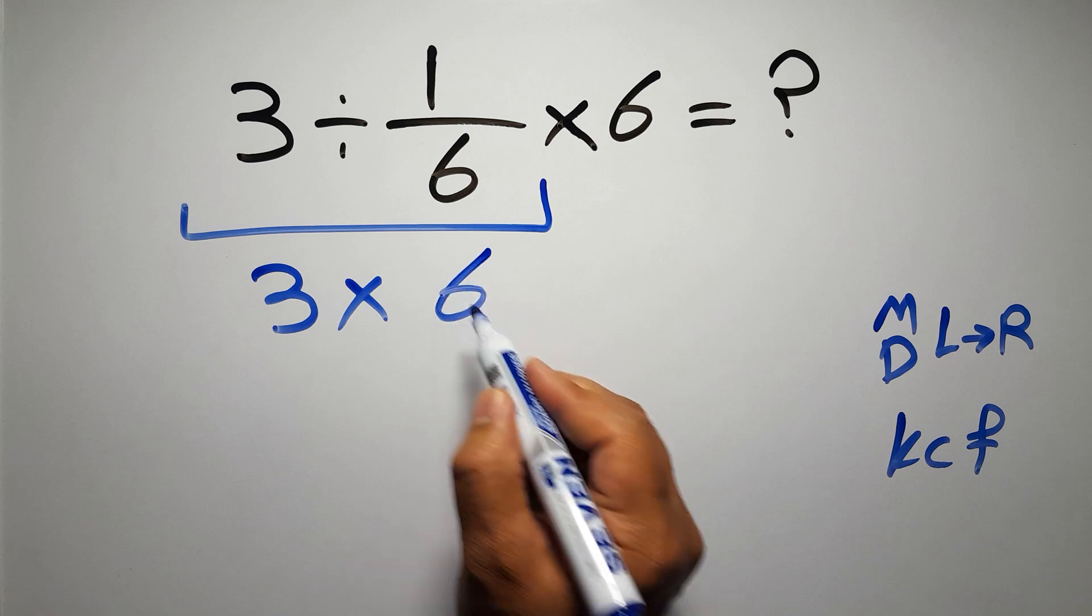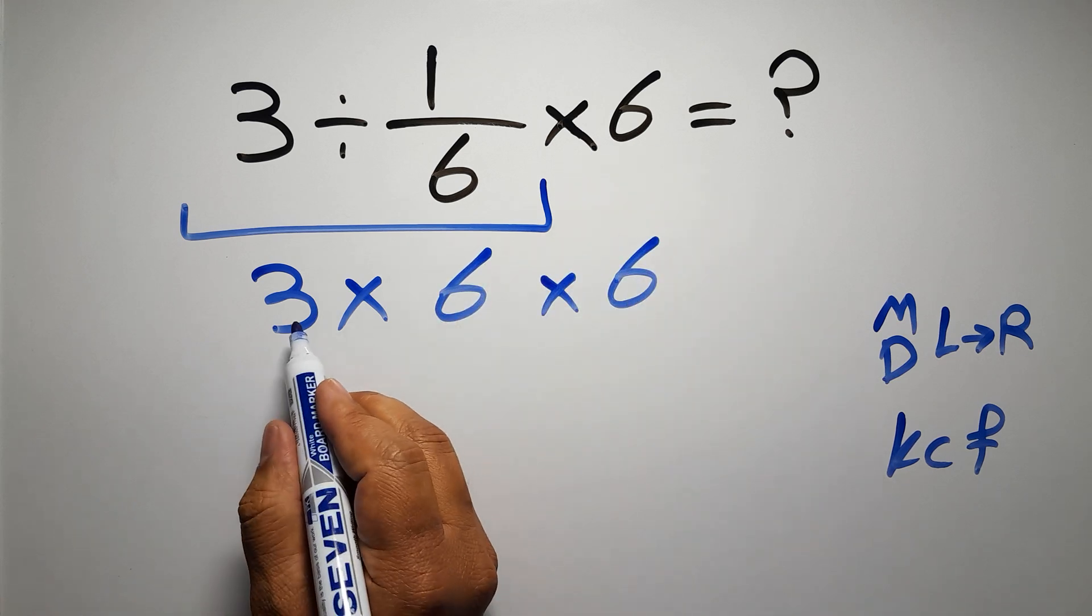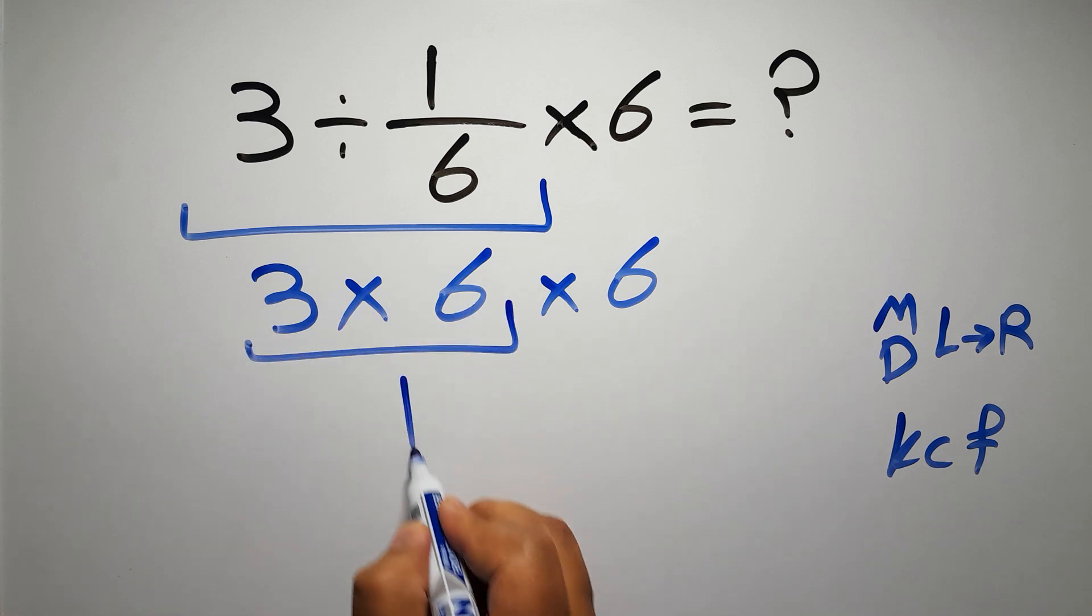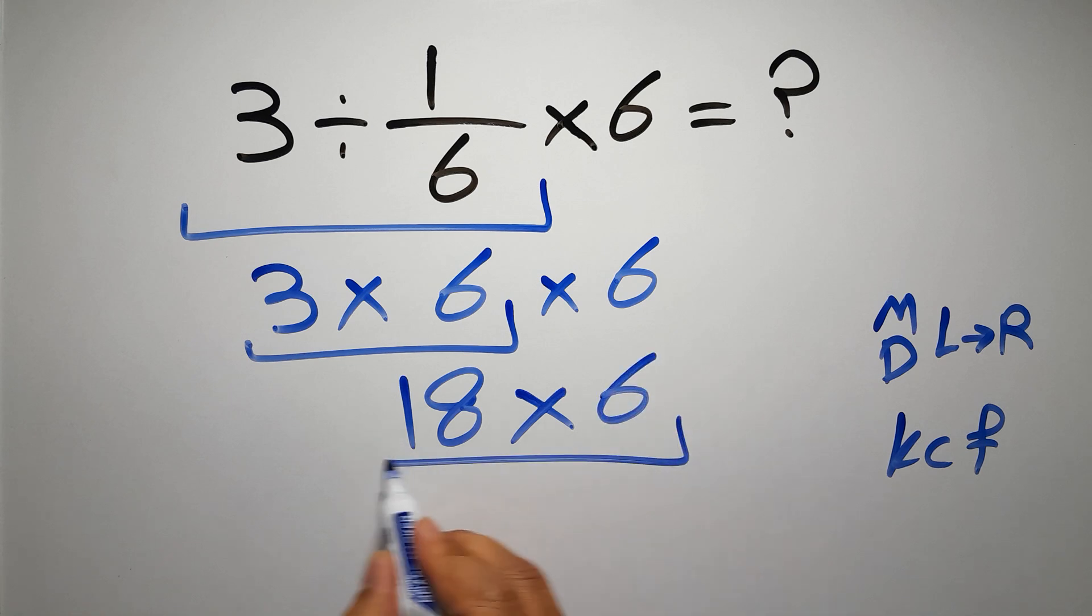And again here we have times six, so three times six times six. Three times six gives us 18, so 18 times six. Okay, six times eight...